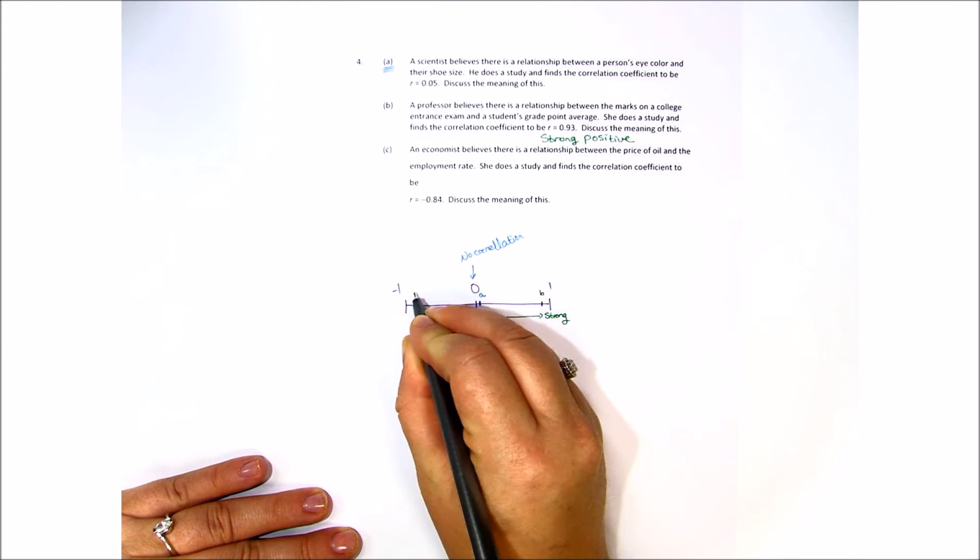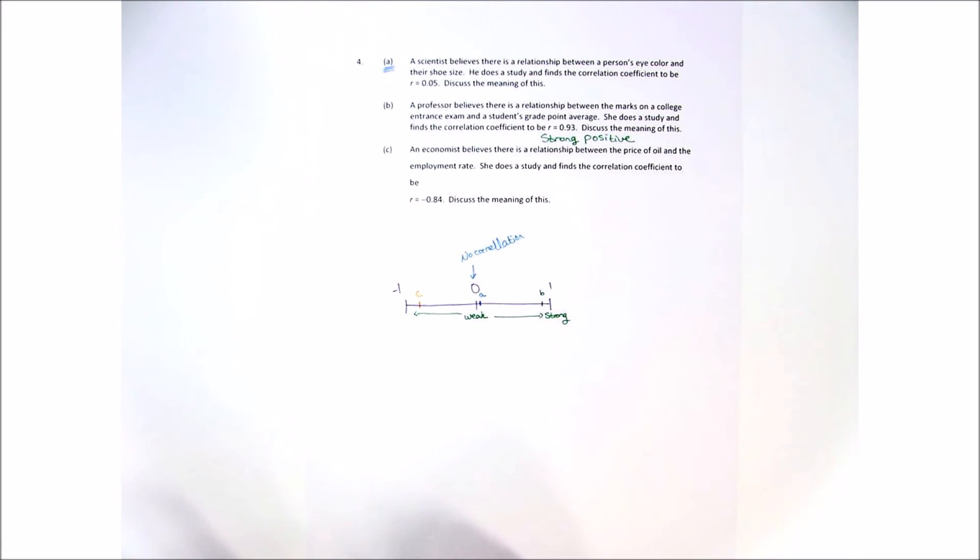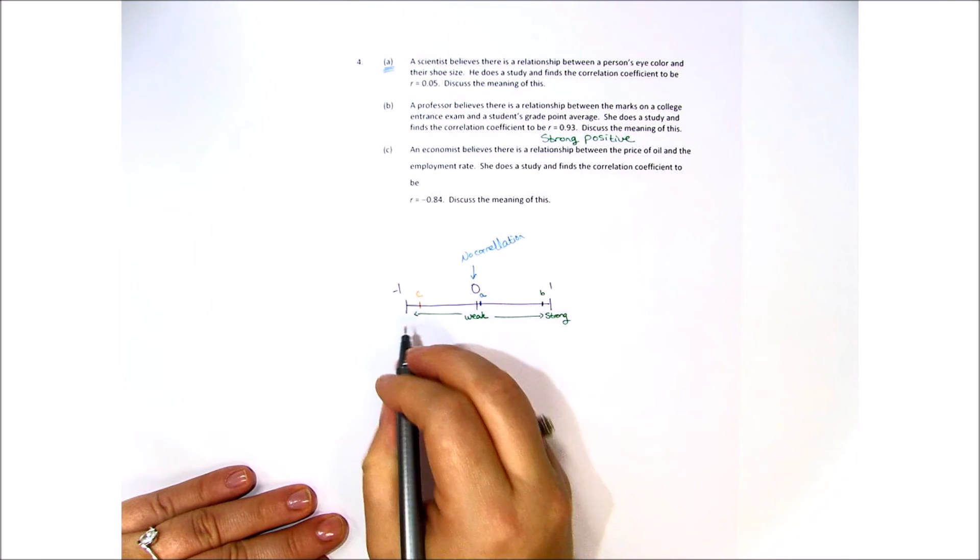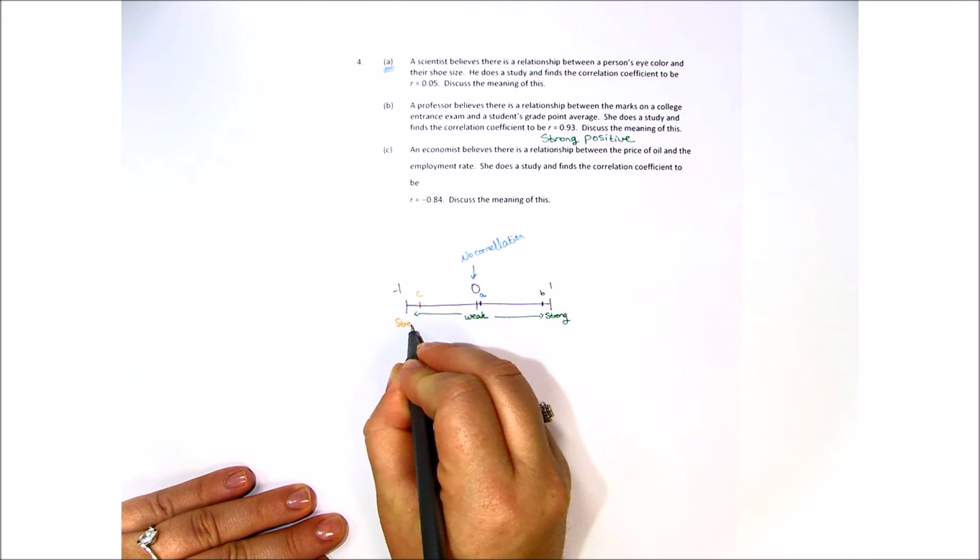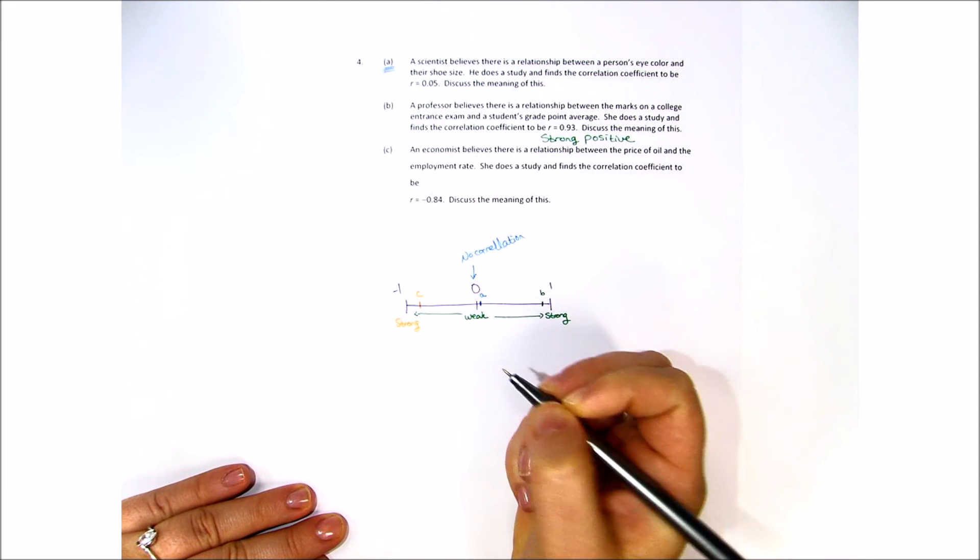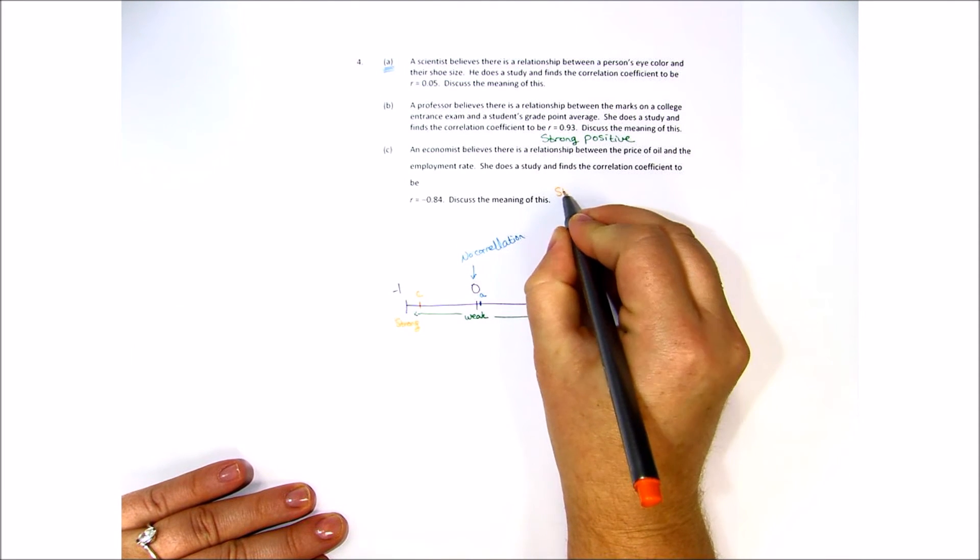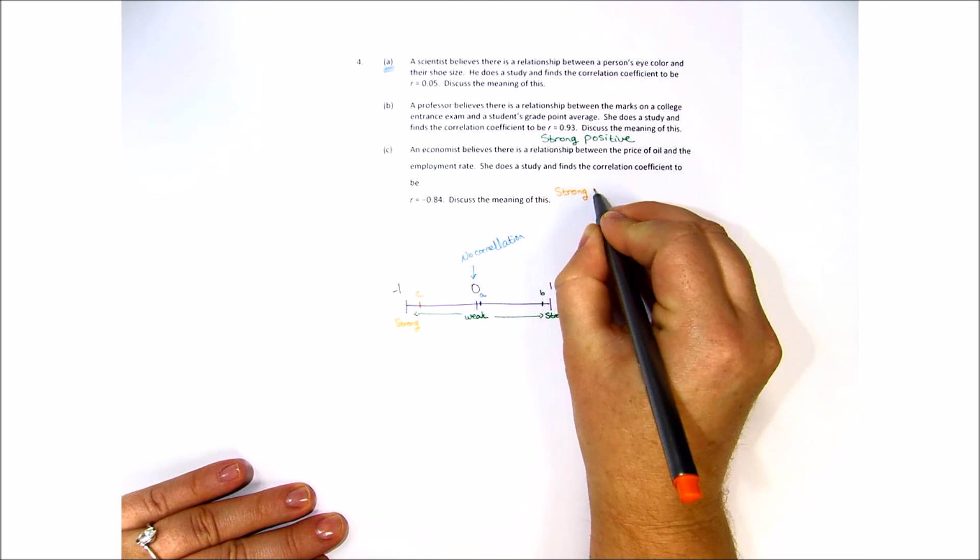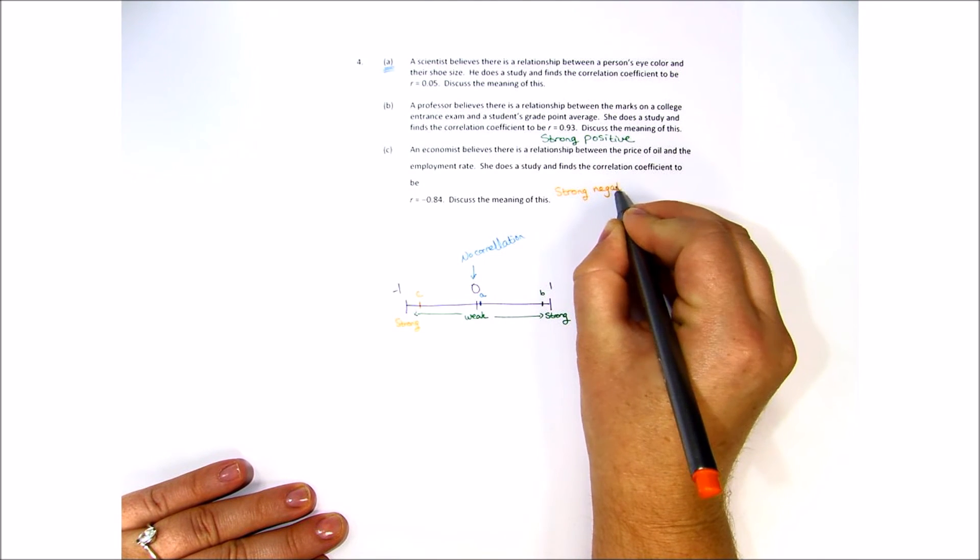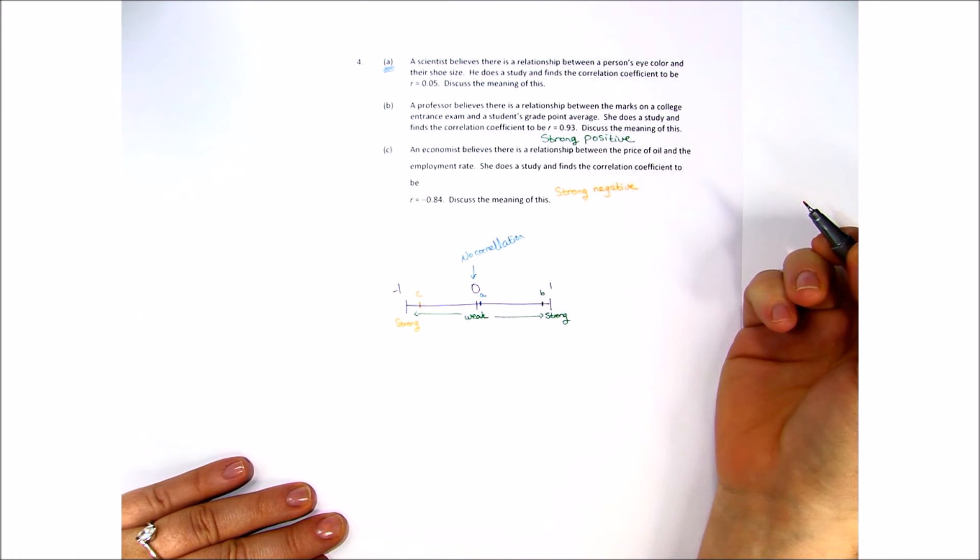Okay, so that's going to be about here. Now as we know, it moves from weak all the way to strong. So if we look at the meaning of this, we expect there to be a strong negative correlation.